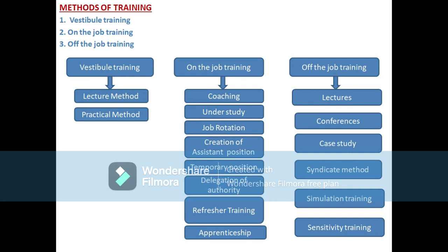These training methods are further divided into sub-methods. Vestibule training includes lecture method and practical method. On-the-job training includes coaching, understudy, job rotation, creation of assistant position, temporary promotion, delegation of authority, refresher training, and apprenticeship. Off-the-job training includes case study, syndicate method, simulation training, and sensitivity training — which is a very important method in off-the-job training.